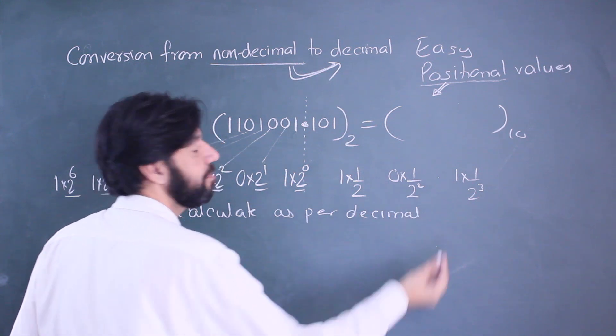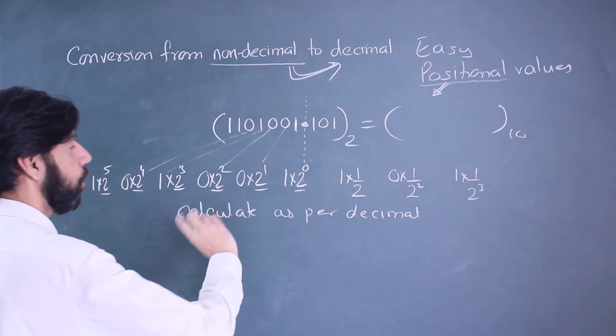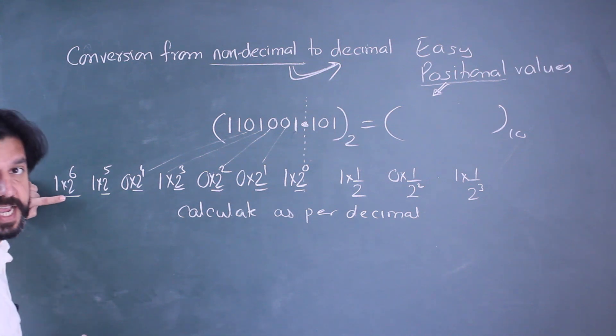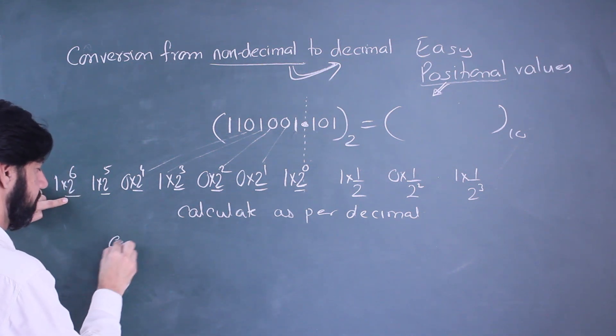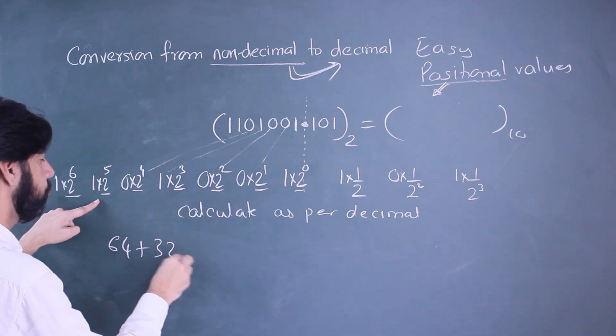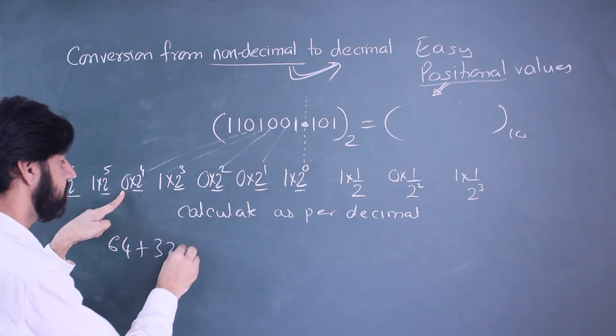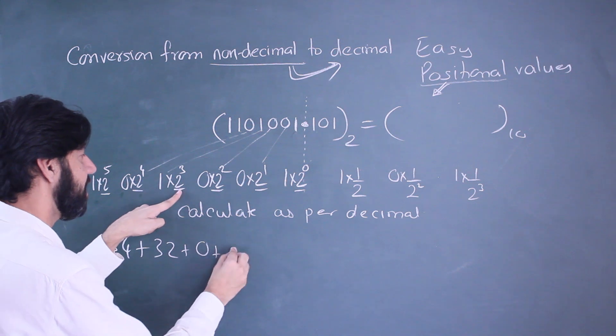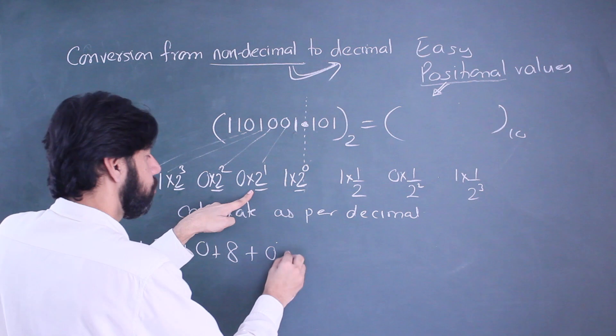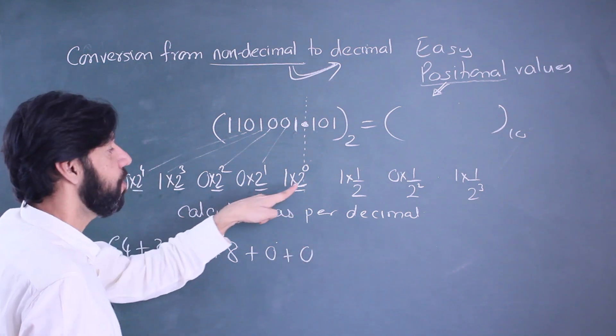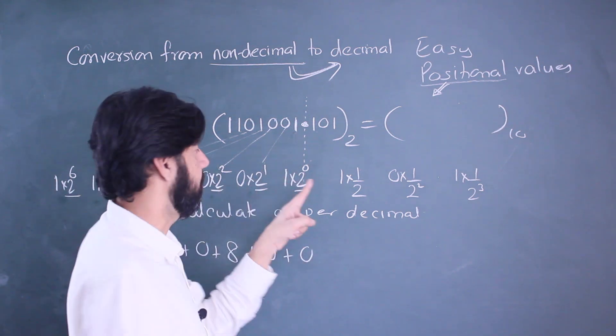Now when we calculate as per decimal, we are going to get a decimal equivalent. So two raised to six is nothing but 64 plus 32. Sixteen into zero is a zero. Eight into one is one. Four into zero is a zero. Two raised to zero is one. One into one is a one.